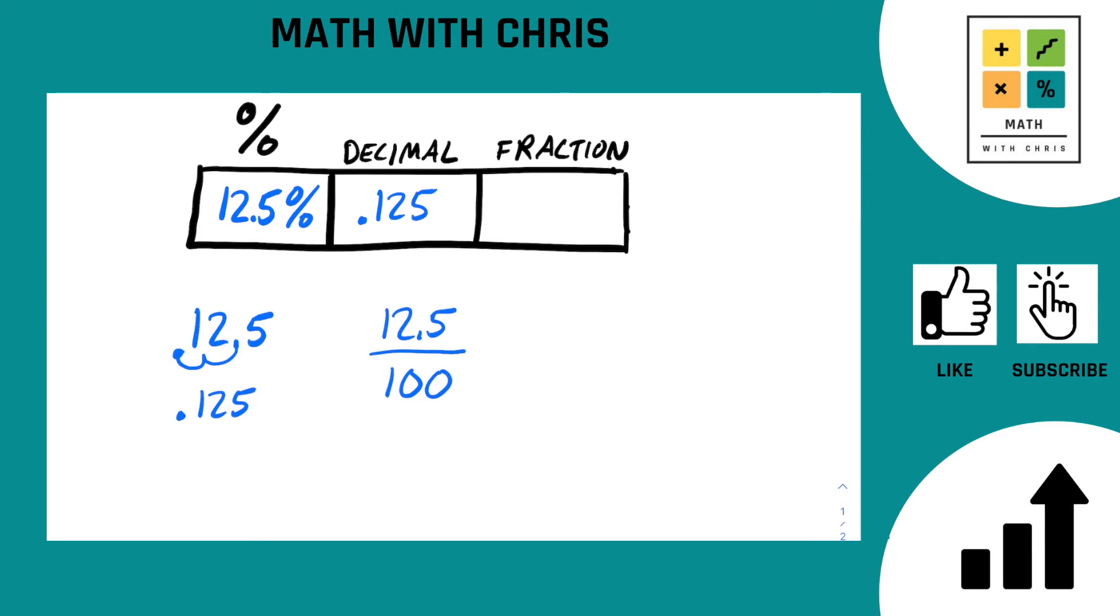So for here I'm going to run through it pretty quick though. In order to get rid of that .5, we're going to multiply both the top and the bottom by 2. That's going to give us 25 over 200. And now we're going to simplify that.